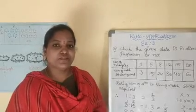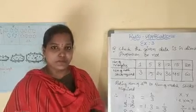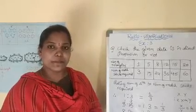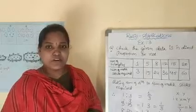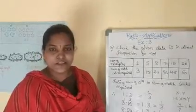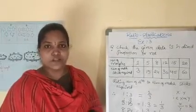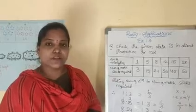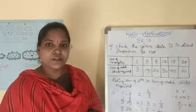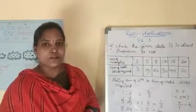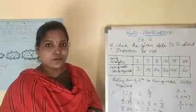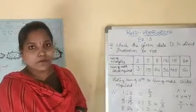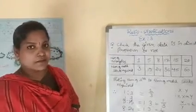In the previous video we discussed about direct proportion. What is meant by direct proportion? If one quantity increases, the other quantity also increases. In the same way, if one quantity decreases, the other quantity also decreases. So today we will solve some more problems on this direct proportion.